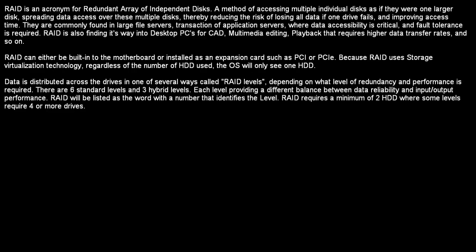People have been writing in to me asking what RAID is or what it does. RAID is an acronym for Redundant Array of Independent Disks, a method of accessing multiple individual disks as if they were one larger disk, spreading data access over multiple disks, thereby reducing the risk of losing all data if one drive fails. And it improves access times. RAID is commonly found in large file servers and transaction-application servers where data accessibility is critical and fault tolerance is required.